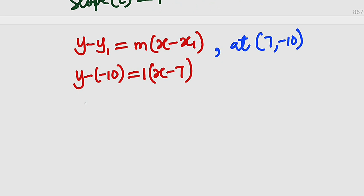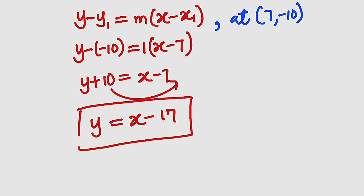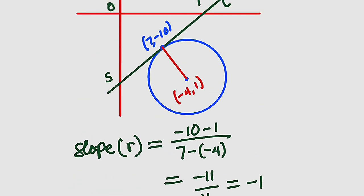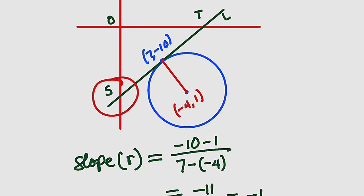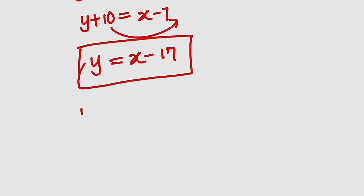y plus 10 equals x minus 7. Taking 10 to the other side it becomes negative, giving us y = x − 17, because negative 7 minus 10 is negative 17. This is the equation of the tangent line. We are told the line cuts the y-axis at S and the x-axis at T. T is the x-intercept — the value of x when y is 0 — and S is the y-intercept, where x equals 0.